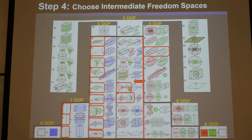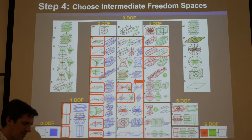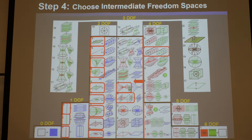For identifying all your options, you can look up one of my papers on serial synthesis using FACT. In the appendix, it gives you, for every freedom space, every intermediate freedom space DOF and type that lies within it. If you go to that paper — all my papers are on my publications on the Flexible Research Group website — you find the one that deals with serial systems and look that up.